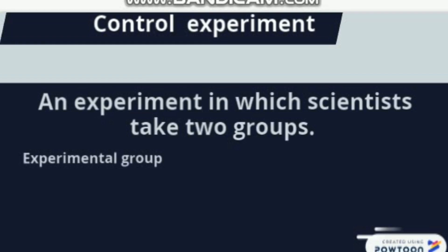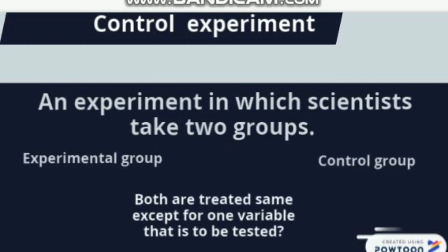The first group is the experimental group and the second one is the control group. Both are treated the same except for one variable that is to be tested. It is quite difficult to understand, so let's understand it with an easy example.